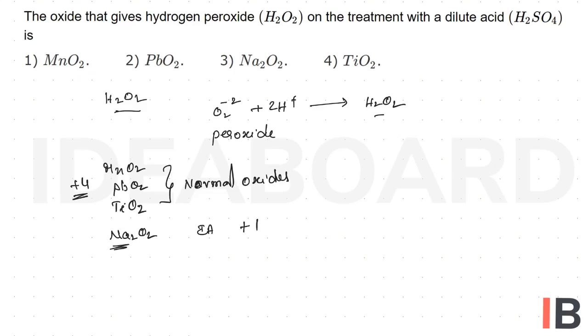That means purely it is exhibiting plus 1 times 2, that is plus 2, whereas O2 is with minus 2. So this is only the peroxide, thereby this sodium peroxide on treating with acid is able to produce hydrogen peroxide.